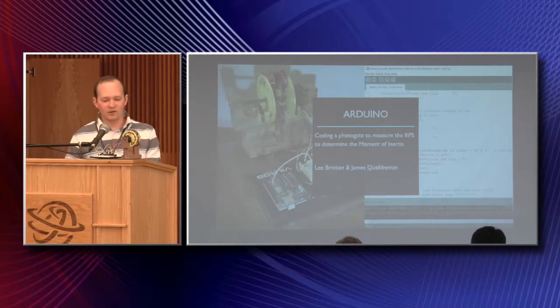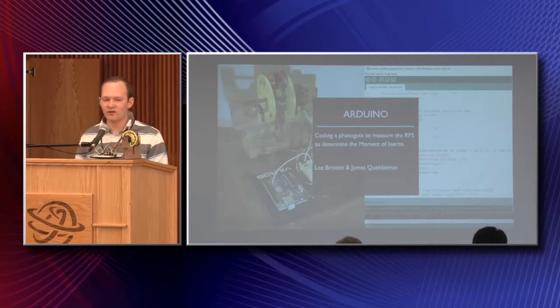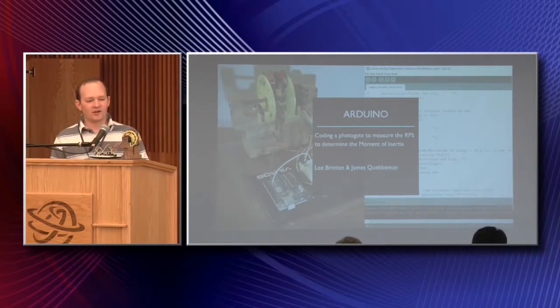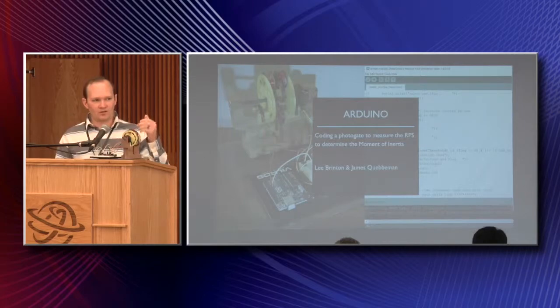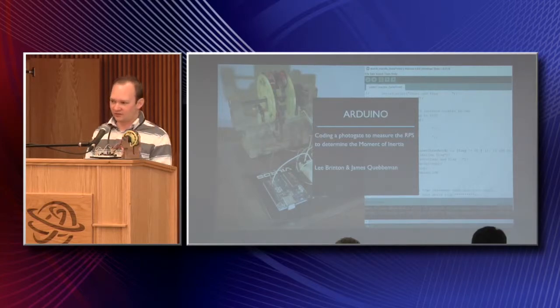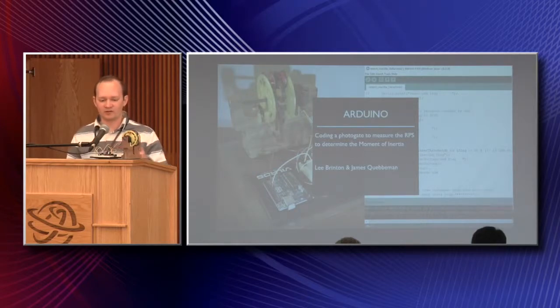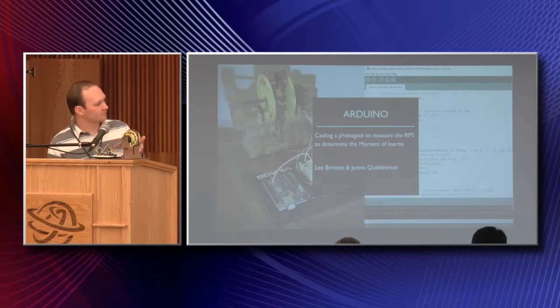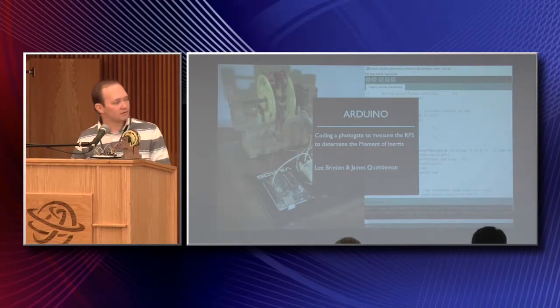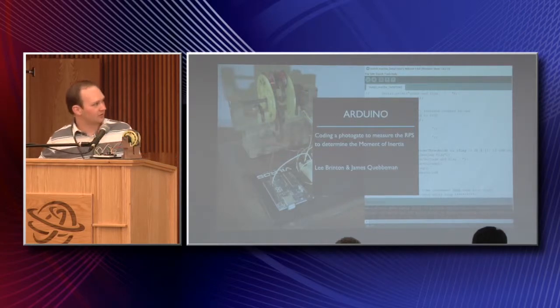The next piece of it was using an Arduino to kind of figure out what else is going on. I needed to find the rotations per second. So I built my own photogate and bought an LED and photogate transistor. So when the light hits the photogate transistor, it can now count between when the light is on and off as it spins. So I was able to build the photogate, the rotations per second.